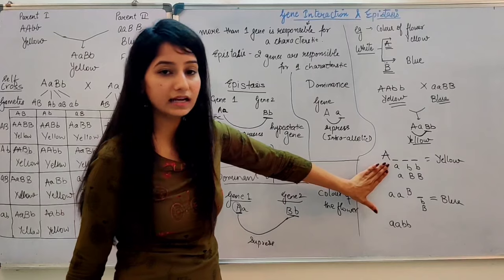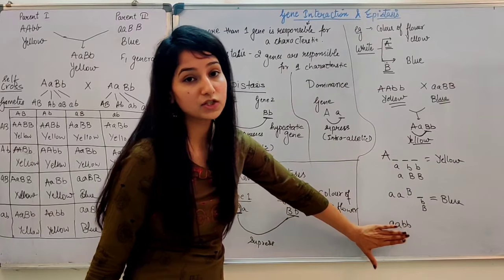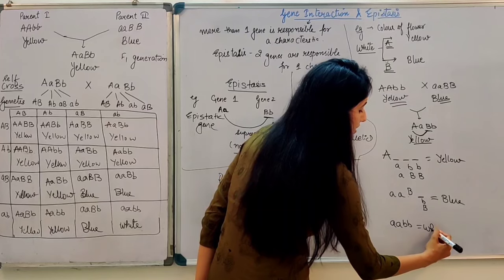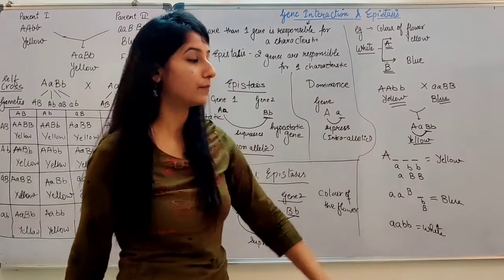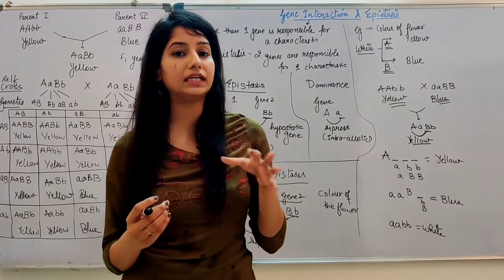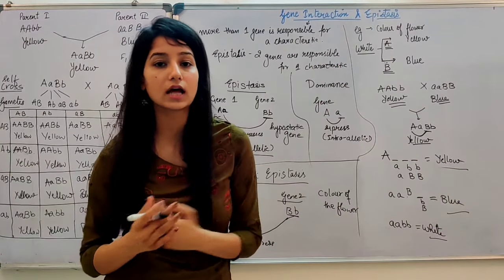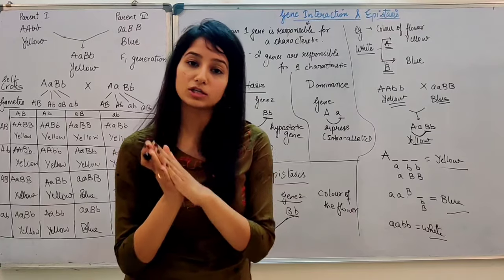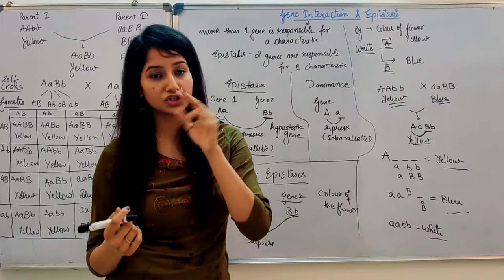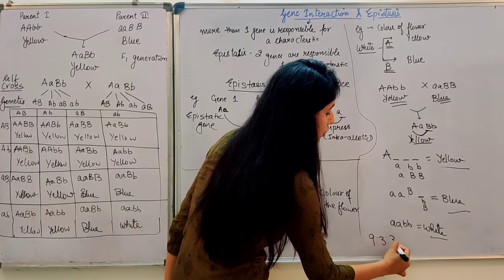If small a and small b are both present — neither capital A nor capital B are present — there will be no pigment, so the flower will be white. So we have seen the dihybrid cross. In a normal dihybrid cross with two characteristics and two genes, the ratio is 9:3:3:1.